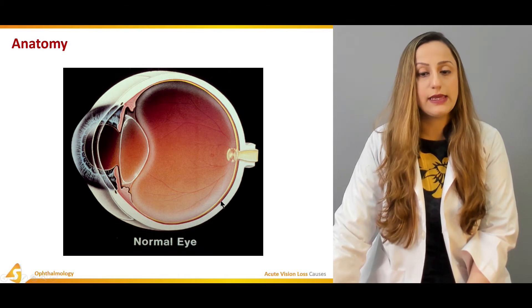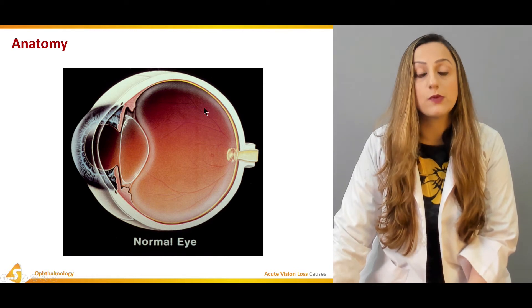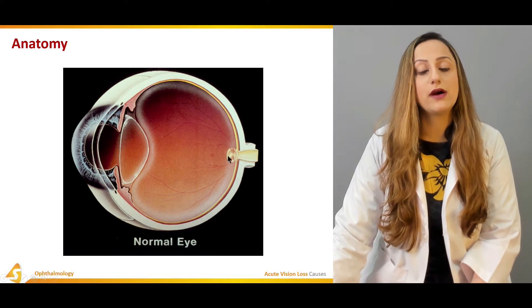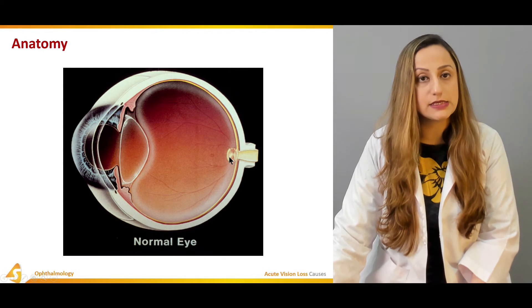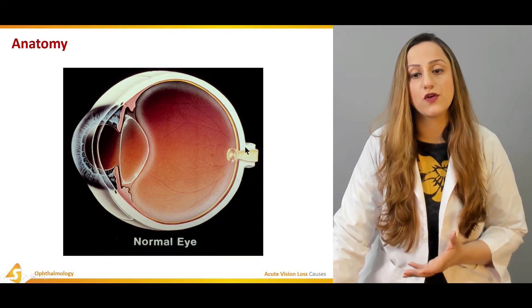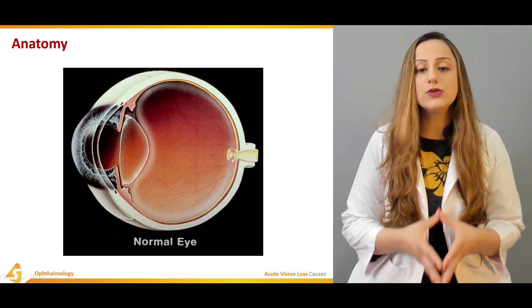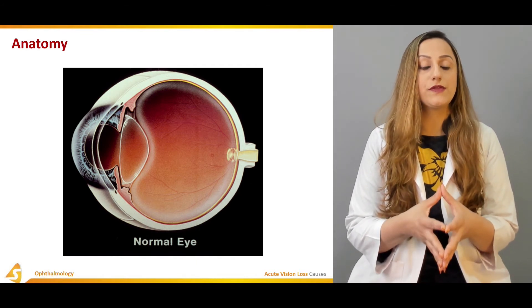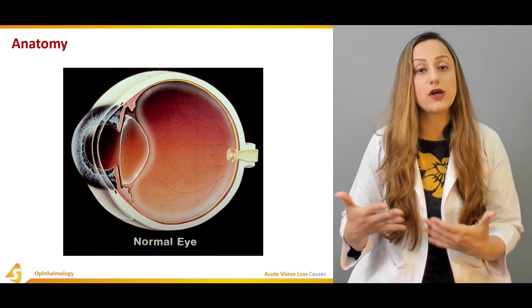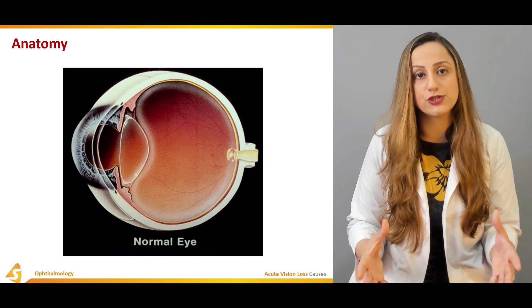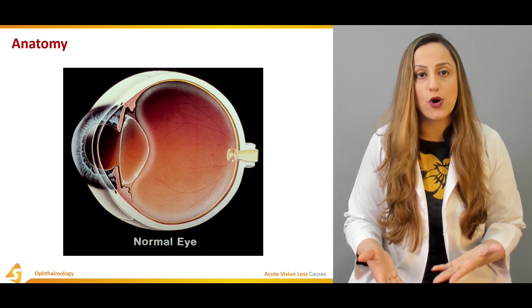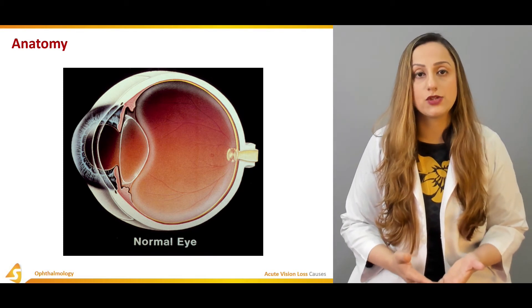When we talk about the retina, we can have inflammatory changes and retinal detachments, both of which can lead to acute vision loss. There is also optic neuritis, which is an inflammatory condition that can lead to sudden loss of vision. These are some of the key anatomical structures one should know when formulating a differential diagnosis for a patient presenting with acute vision loss.